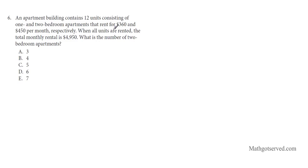It says an apartment building contains 12 units, consisting of 1 bedroom and 2 bedroom apartments that rent for $360 and $450 per month respectively. When all units are rented, the total monthly rental is $4,950. What is the number of 2 bedroom apartments? Let's start by declaring our variables. Let x equal number of 1 bedroom and let y equal number of 2 bedroom.